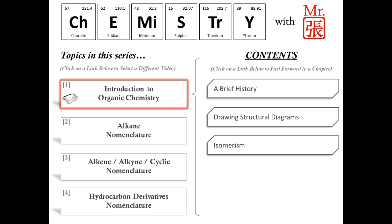In this video tutorial series we'll be looking at the fundamentals of organic chemistry nomenclature. In particular we'll be looking at how to name and draw simple alkanes, alkenes, alkynes, and cyclic hydrocarbons.